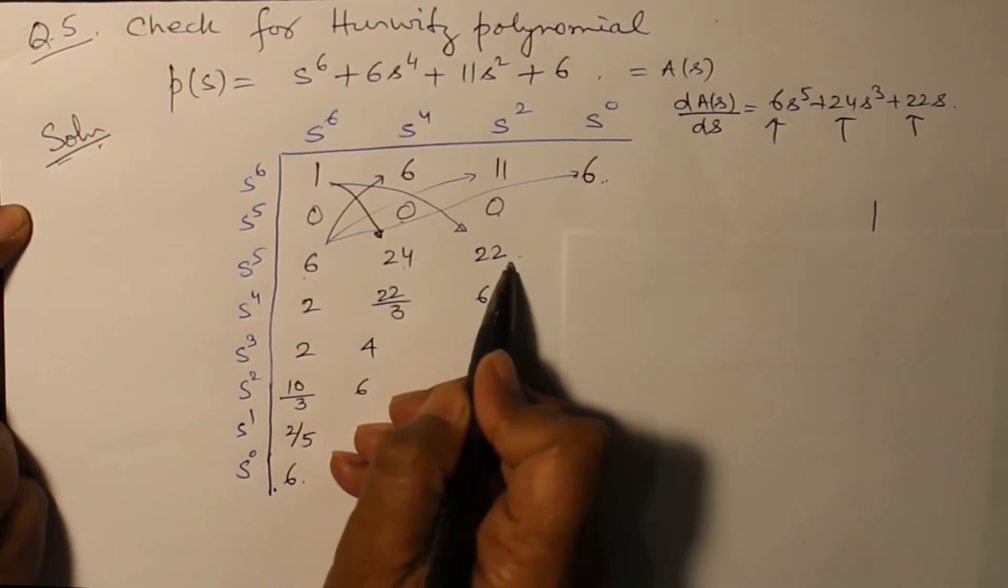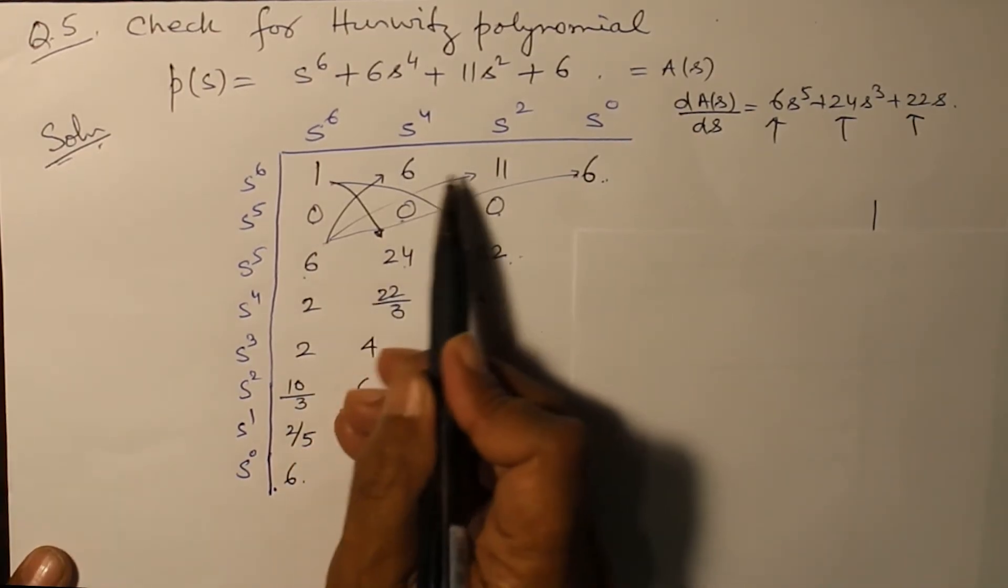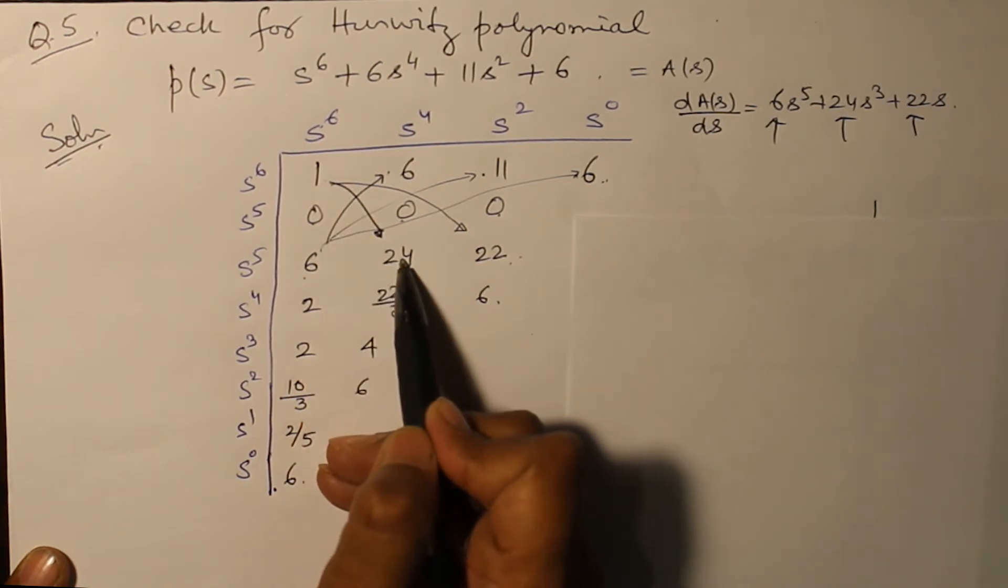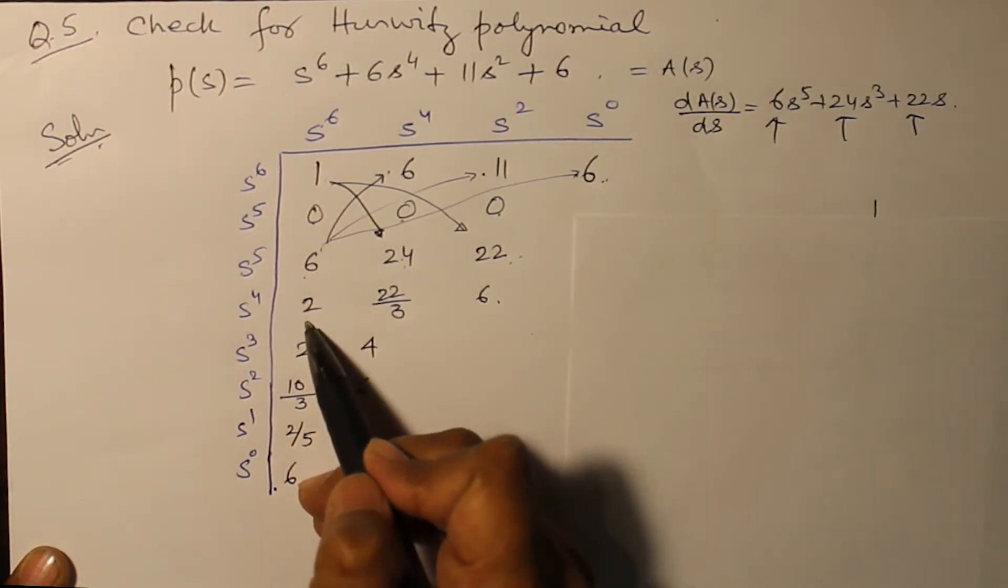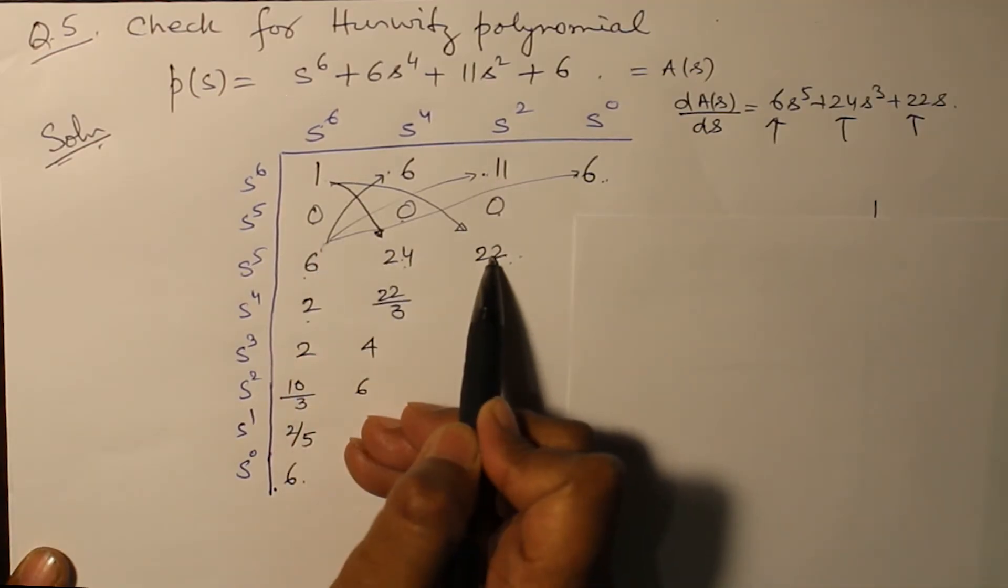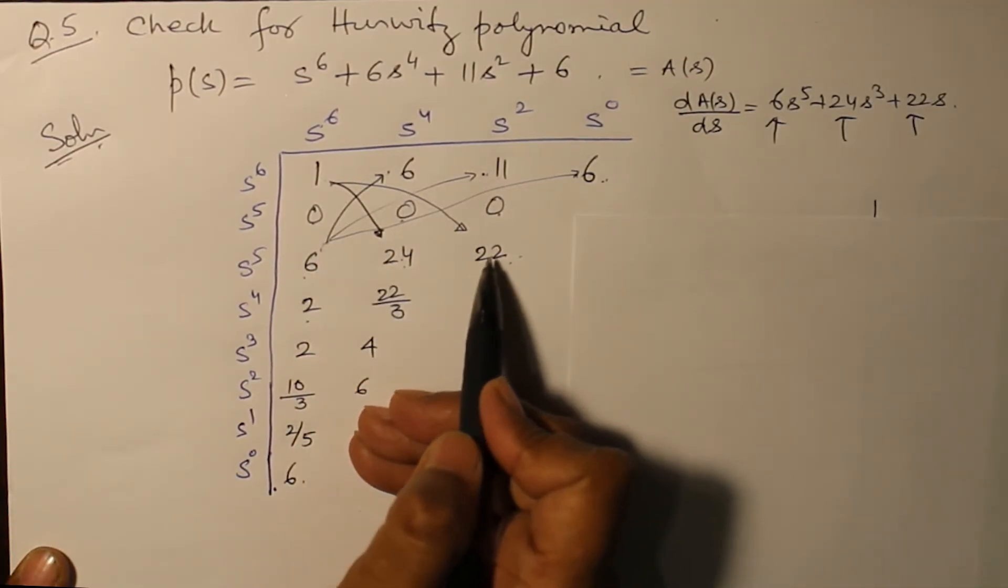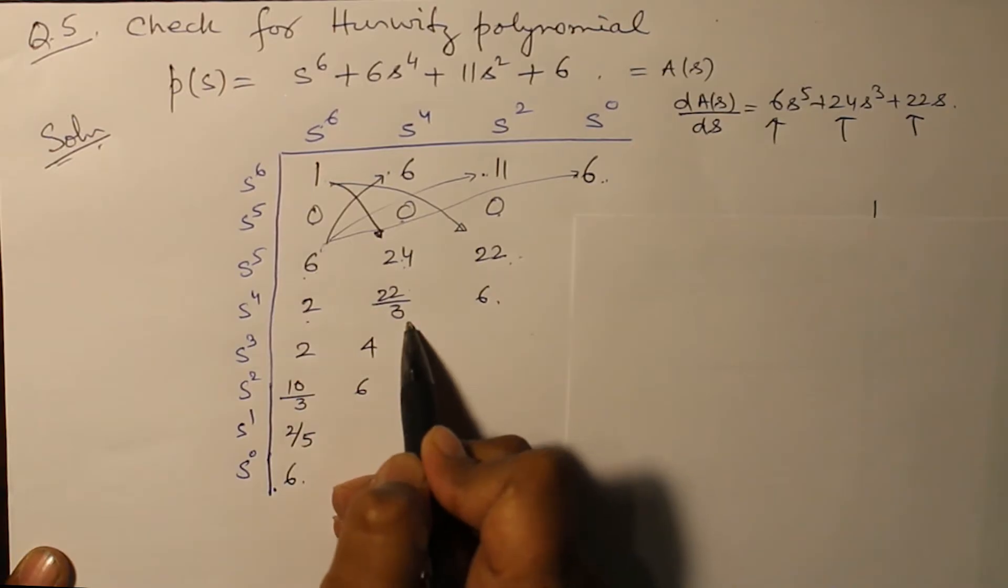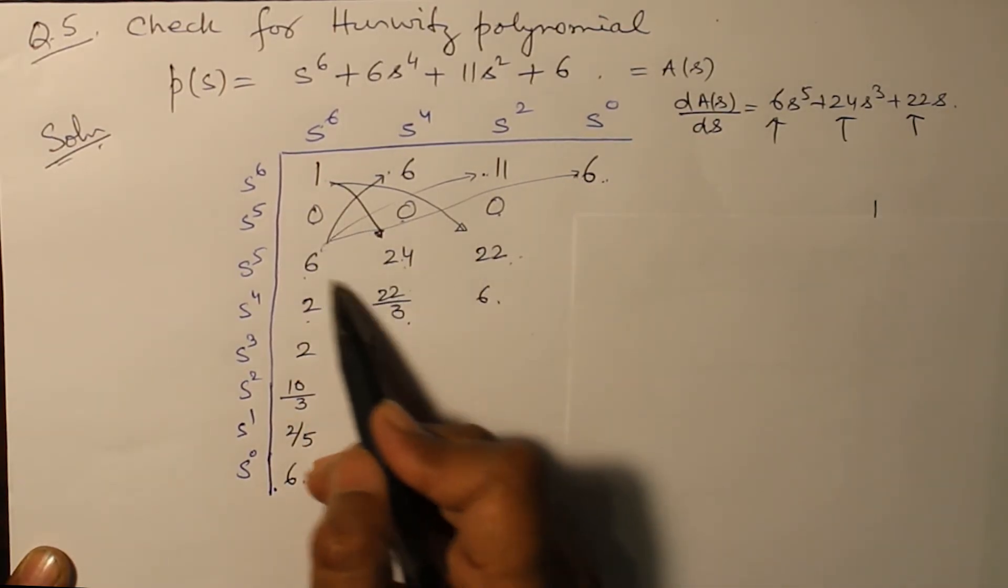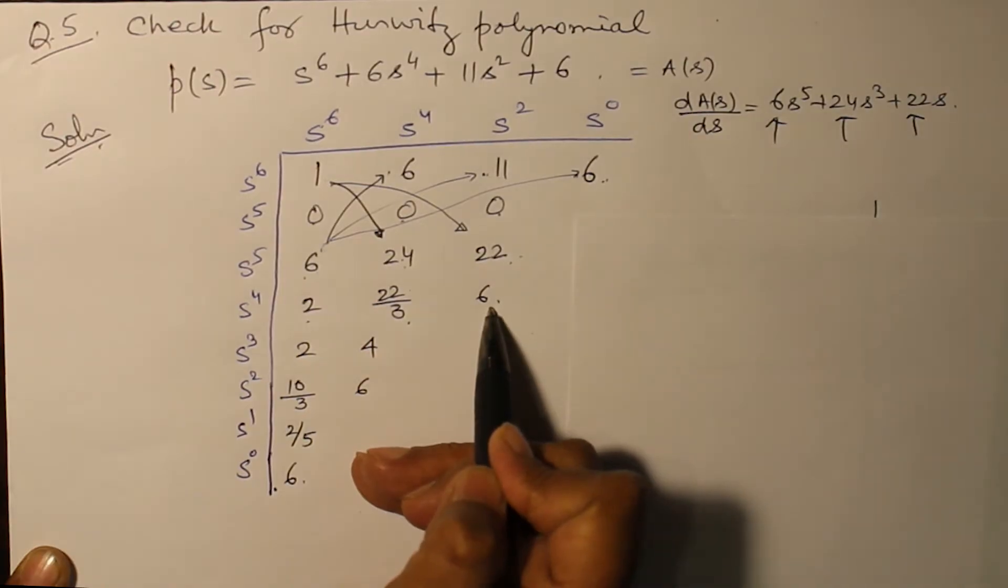The coefficients 6, 24, and 22 are written now. 6, 24, and 22. 6 into 11, 66 - sorry, 6 into 6, 36 minus 24, that is 12 divided by 6, that gives you 2. 6 into 11, 66 minus 1 into 22, that is 44, 44 divided by 6 gives you 22 by 3. And the last one: 6 into 6 minus 0 over 6 gives you 6.